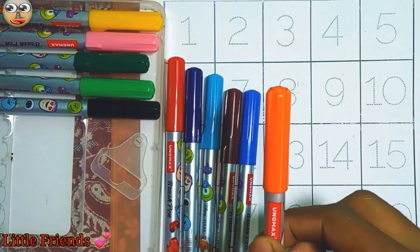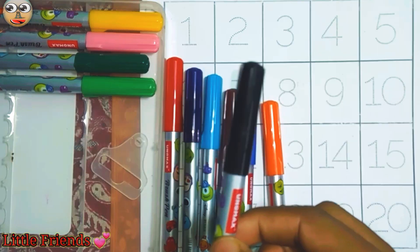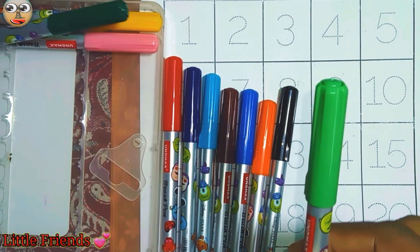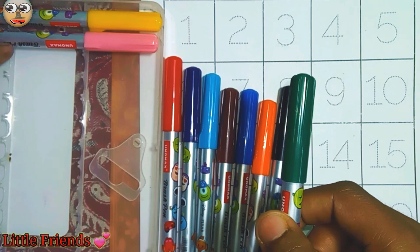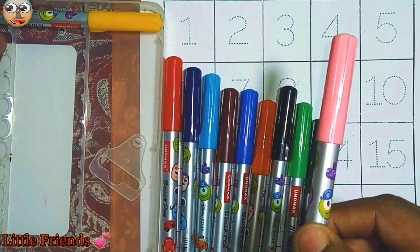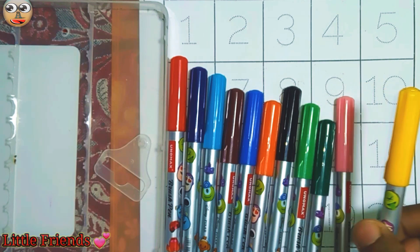This is orange color. This is black color. This is green color. This is dark green color. This is peach color. And this is yellow color.